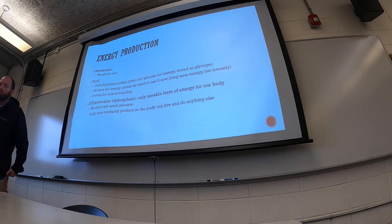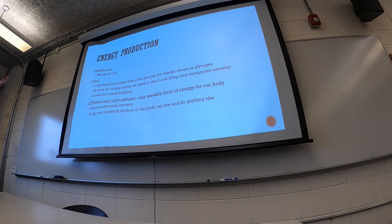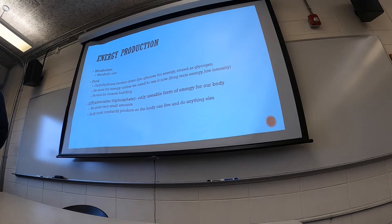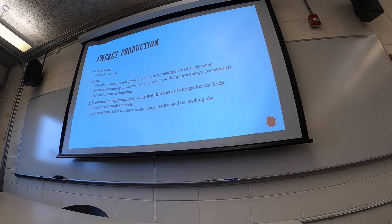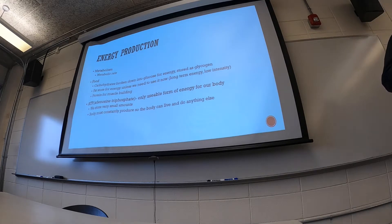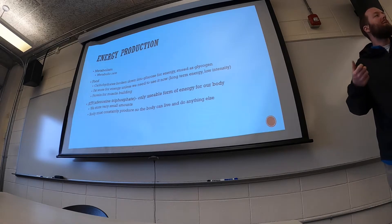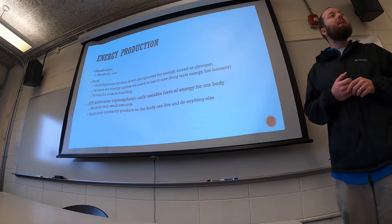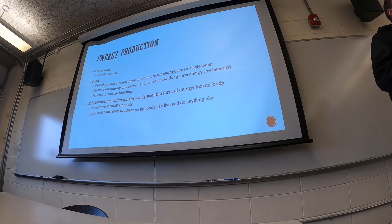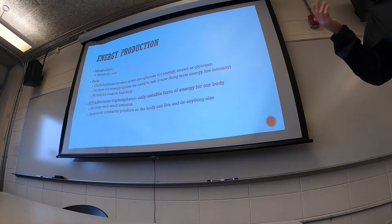Fat is a storage form of energy — how we store energy for a long period of time. We don't store much glycogen, and not for very long, but fat we store for a really long time. Your body doesn't like to use fat unless it has to. If you do something for a really long time, or something very low intensity like sitting here right now, your body is mainly using fat to produce energy. The last macronutrient is protein — we can use it for energy, but our body would rather use it to build muscle, skin, and other body components.